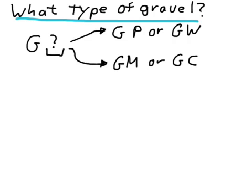If, on the other hand, it has a great deal of fine material, it will classify either as a GM, silty gravel, or a GC, a clay gravel, depending on the type of fines. Or, if it has a medium amount of fine-grained material, we'll actually have to classify it with both of these types.